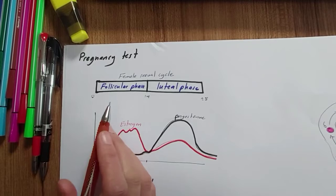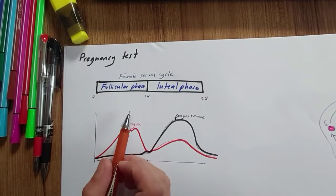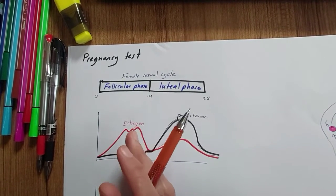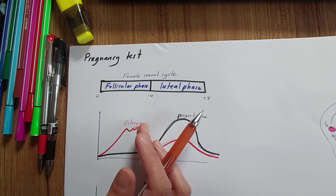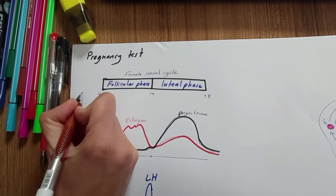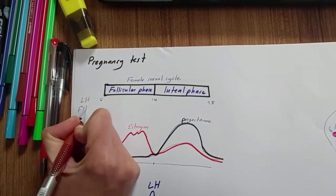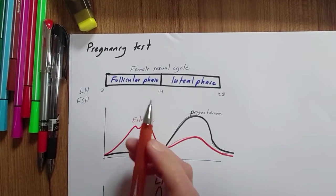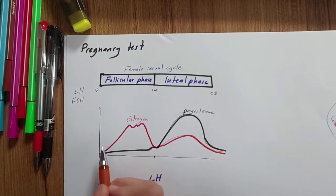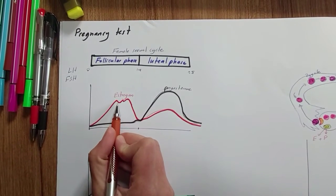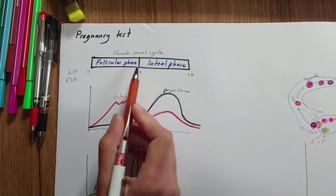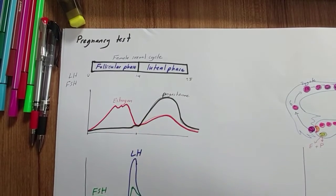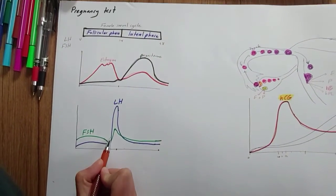At childhood, the female ovaries contain several primordial follicles which are arrested at the prophase stage. At puberty, under the effect of anterior pituitary hormones — LH (luteinizing hormone) and FSH (follicle stimulating hormone) — the primordial follicles start growing rapidly each month. The growing follicle also starts secreting estrogen during the follicular phase. At mid-cycle, around day 14, there is an LH surge from the anterior pituitary.